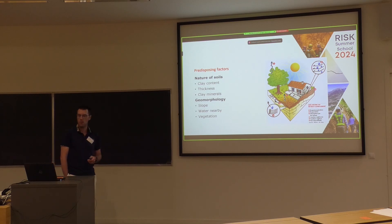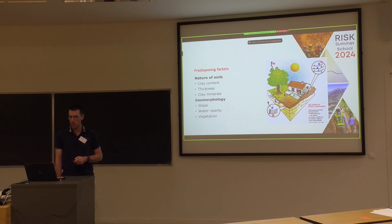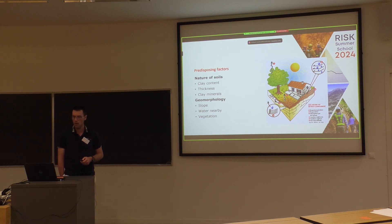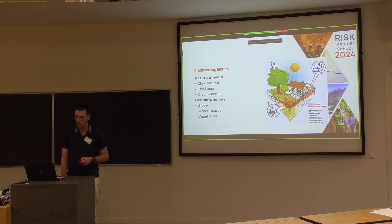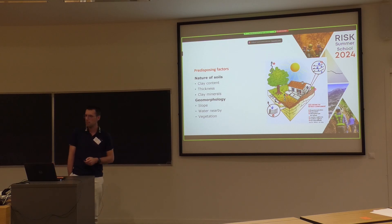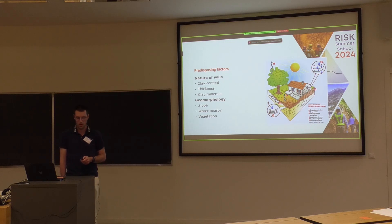For example, whether the house is built on a slope, if there is water nearby such as surface water or a river, we also talk about the water table, shallow water, and the presence of vegetation. Lamine told us about the importance of the presence of trees near the house.